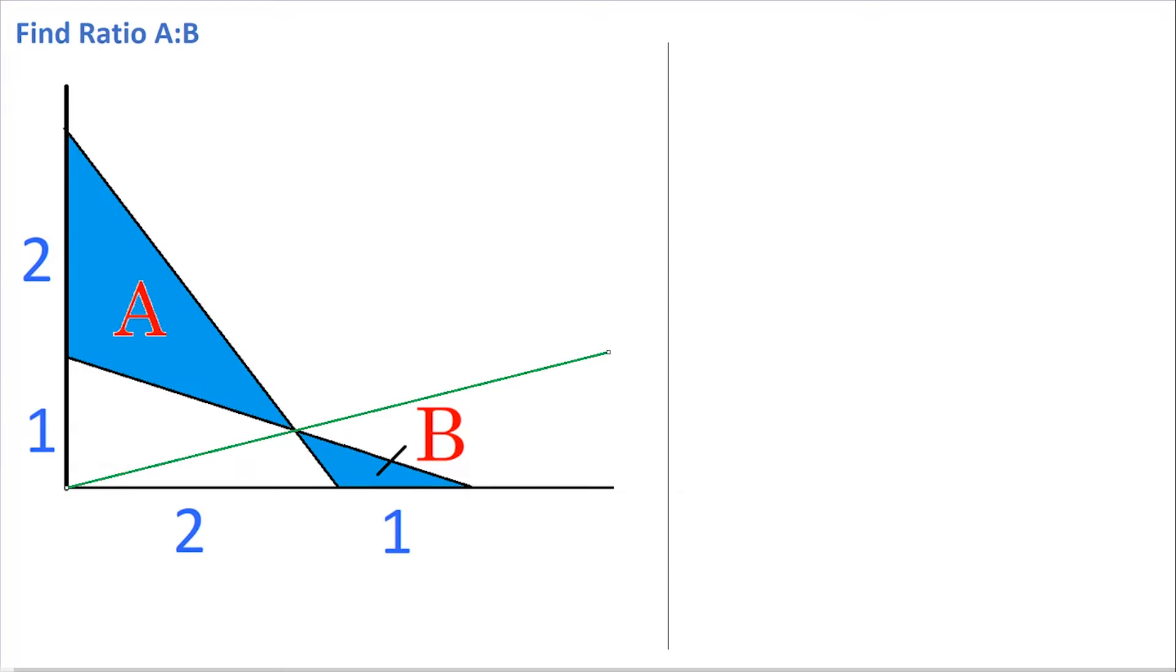Now if we consider these two bottom triangles, they both have exactly the same height, but the base of this triangle has a length of 1 and the base of this triangle has a length of 2. Therefore, this triangle is twice the size of this triangle, which means that its area must be 2B.